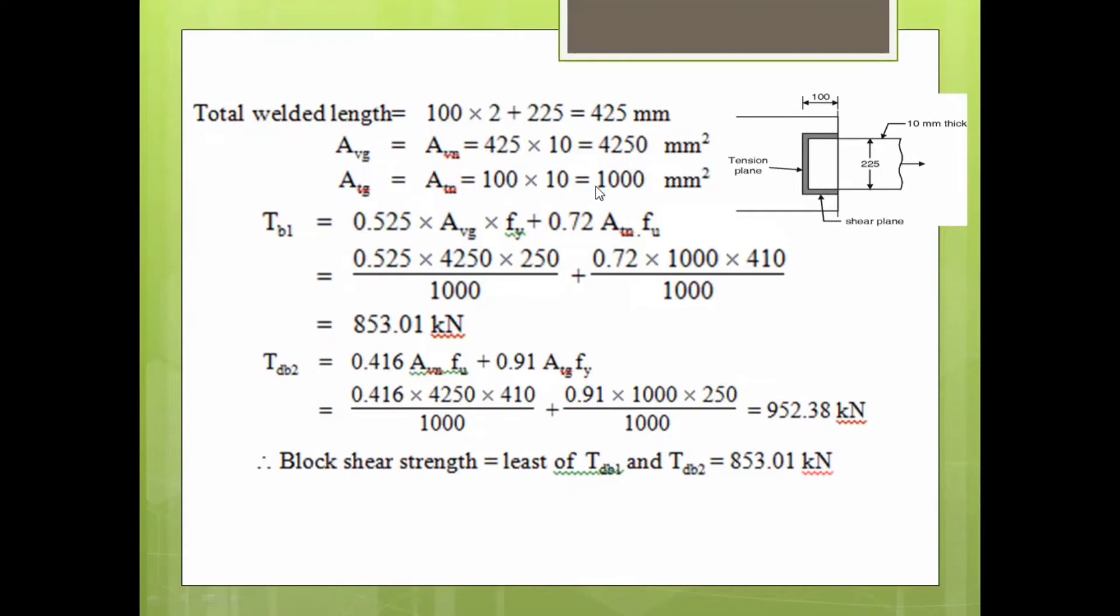Once these two areas are obtained, use this equation for TB1: 0.525 times ABG times FY plus 0.72 times ATN times FU, where FY is 250 and FU is 410. Substituting the values, TB1 comes to 853.01 kilonewton.